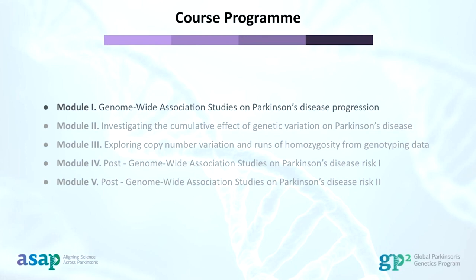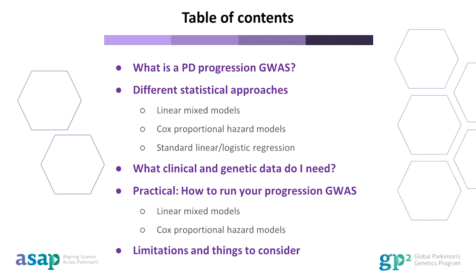This will be the first module of five from our core syllabus. Here's a brief summary of my presentation. Firstly, I will give some background about genome-wide association studies, or GWASs, of Parkinson's progression. I will then talk about different statistical approaches to assess Parkinson's progression in your GWAS. Next, I will talk about the clinical and genetic data needed for your analysis. Then we will move into the practical session and learn how to run your progression GWAS in TERRA with an example dataset. At the end, I will talk about limitations and things to consider when running your progression GWAS.